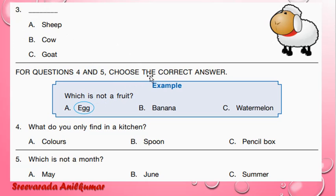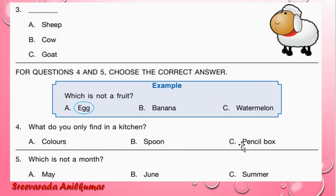Next question: Choose the correct answer. What do you find in a kitchen? You will find a spoon in a kitchen. You will not find colours or a pencil box. B is the correct option.